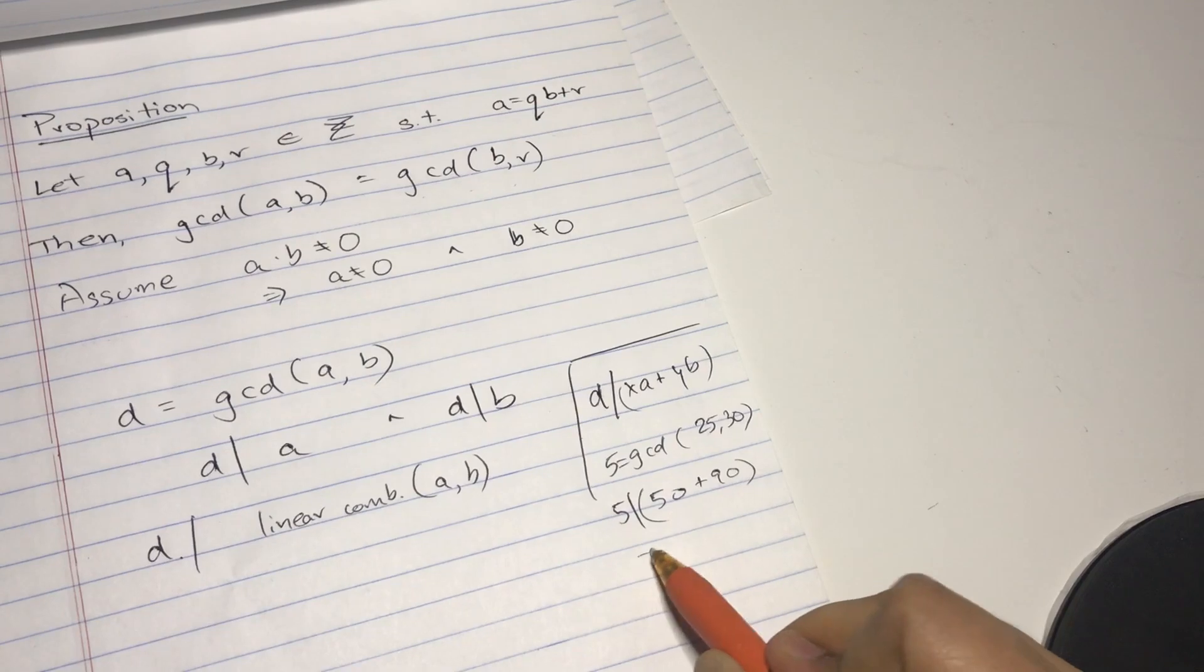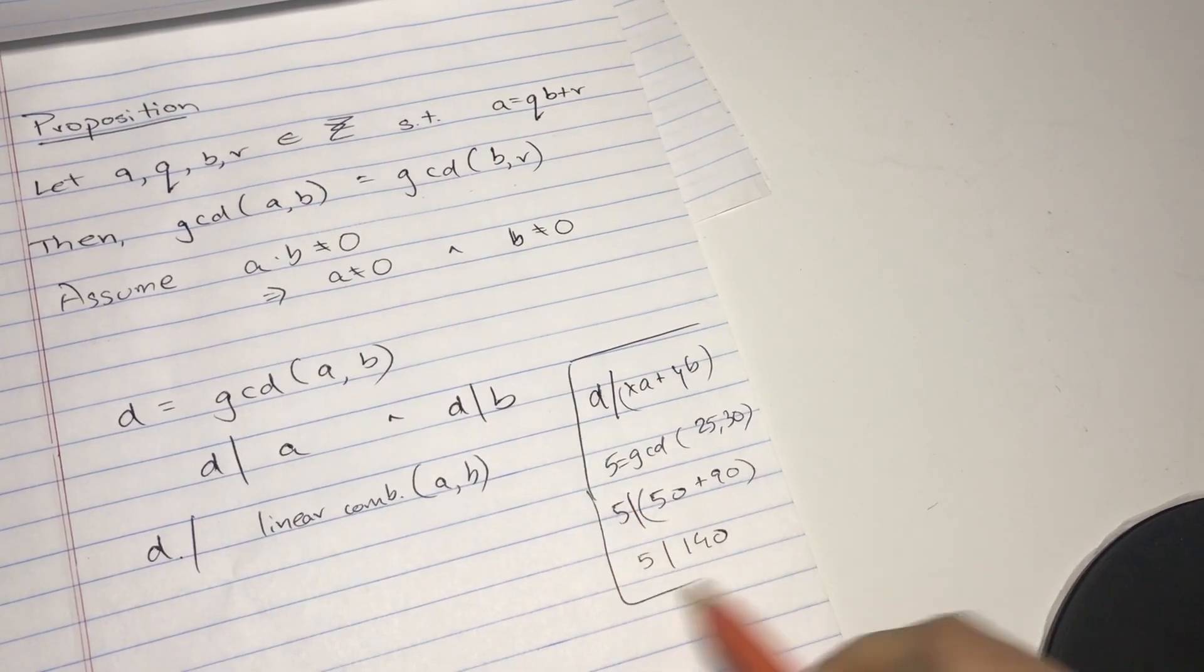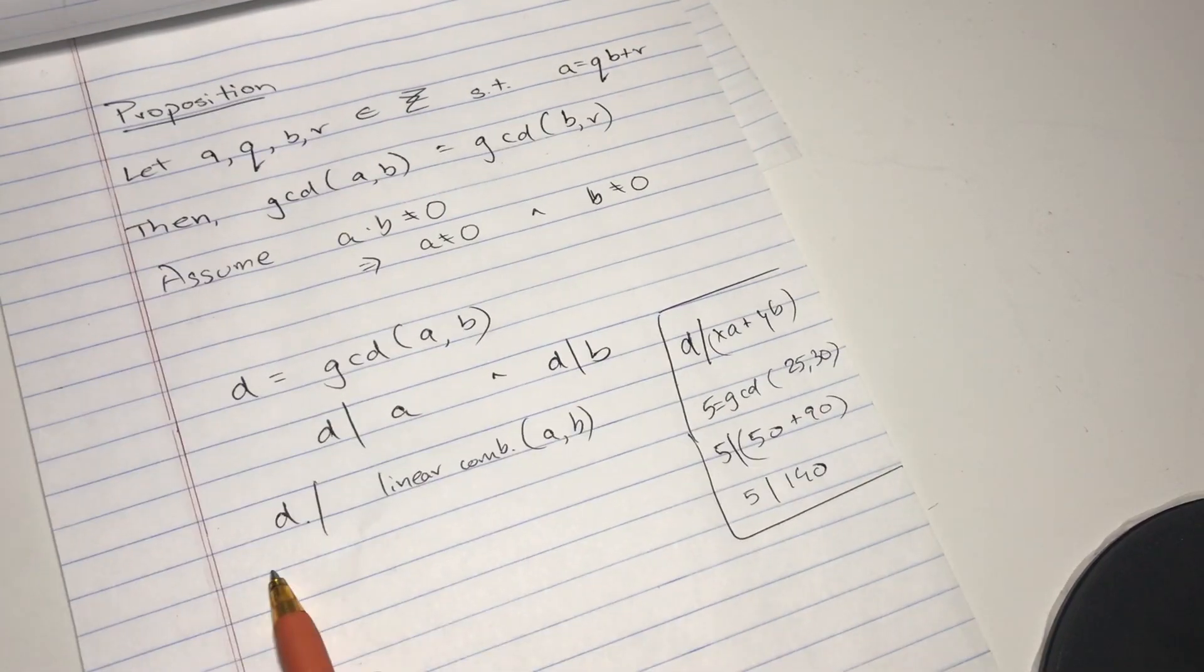So 5 divides 140, which is the truth. So yes, d divides any linear combination. Now let's say the linear combination is actually...